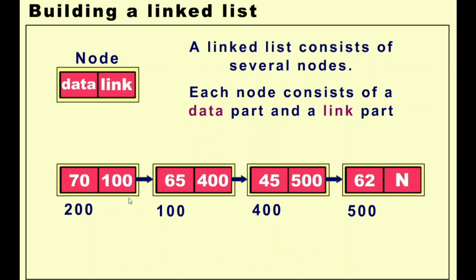So now you can see: the first node has 100 — the address of the second node. The second node has 400 — the address of the third node. Similarly, 500 connects to the fourth node. The last node's address is null because it is not connected to any further node. This is how we create a linked list.